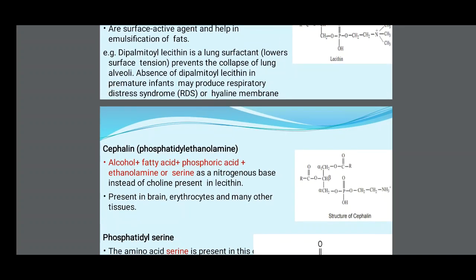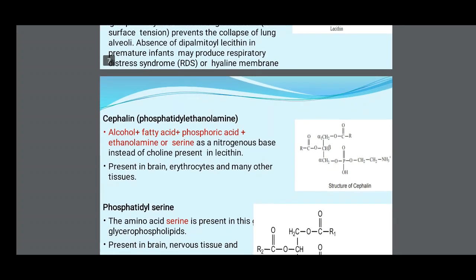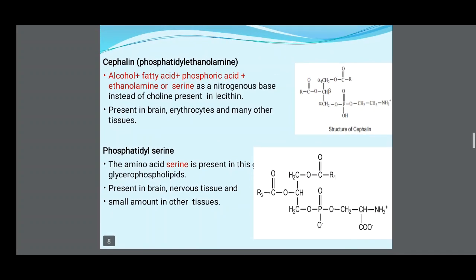Cephalin contains alcohol, fatty acid, phosphoric acid, and ethanolamine or serine as the nitrogenous base instead of choline (as in lecithin). It is present in brain, erythrocytes, and many other tissues. Phosphatidylserine contains the amino acid serine in its group and is a glycerophospholipid present in brain, nervous tissue, and small amounts in other tissues.